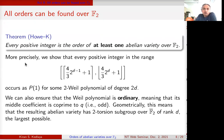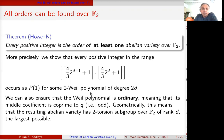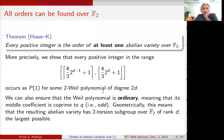More precisely, we show that every positive integer in the range from about (4/3)^(D−1) to about (4/3)^(2D) occurs for a polynomial of degree 2D, where D is what I was calling g. These intervals line up perfectly and tile the positive integers, so you don't miss anything. We can also ensure that the polynomial is ordinary, meaning the middle coefficient is odd. Geometrically, this means the resulting abelian variety has the two-torsion subgroup over F_2-bar as large as possible — the rank is D.